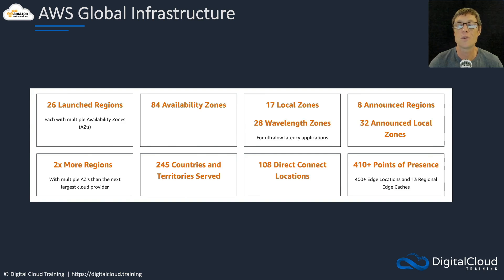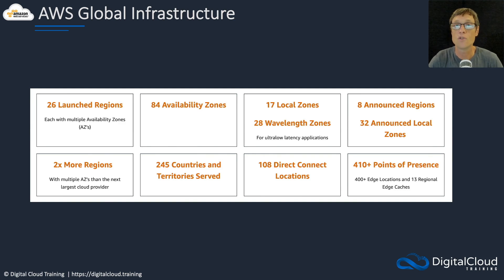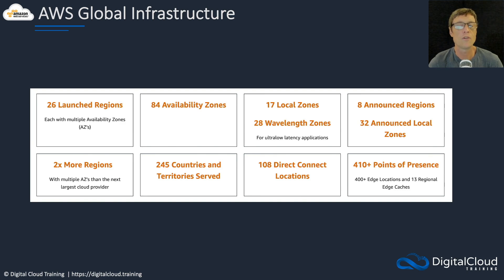Lastly, I'll show you the actual numbers for the AWS global infrastructure today. These numbers change all the time, so it's not important for the exam to know any exact numbers for the number of regions or availability zones. You just need to understand the basic concepts around these different parts of the global infrastructure, but it's good to get an understanding of how many of these there are around the world.